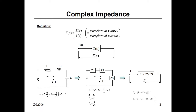The definition of complex impedance for any passive element in an electrical system is the Laplace transform of the voltage across the element over the Laplace transform of the current through the element. Complex impedance is like a transfer function — it's in the S domain.